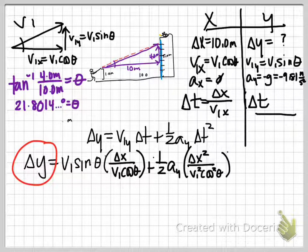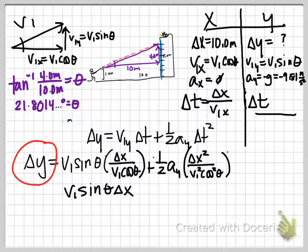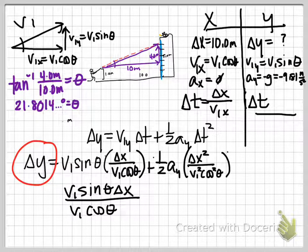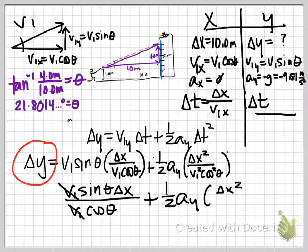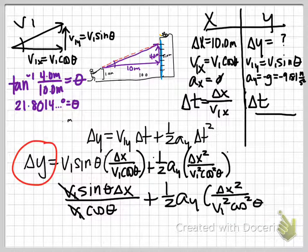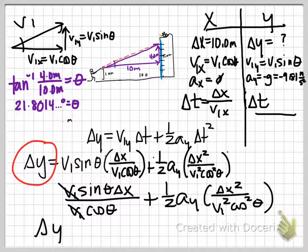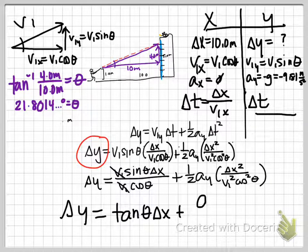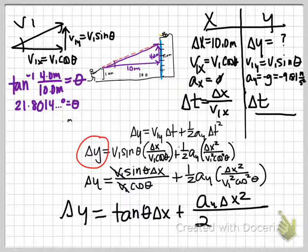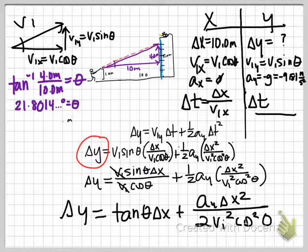First is the trick we saw yesterday: VI sine theta delta X over VI cosine theta. VI is going to cancel. Sine divided by cosine is equal to tangent. I've got tan theta delta X. I can distribute the one-half A sub Y across the expression in the parentheses. So now we have A sub Y delta X squared over 2 VI squared cosine squared theta. At this point, there's nothing there that we don't have, and we can just plug numbers in.